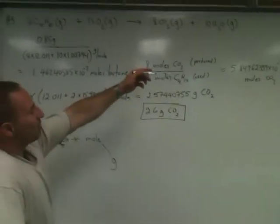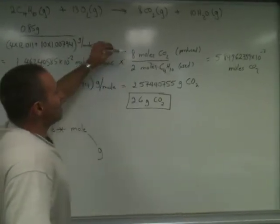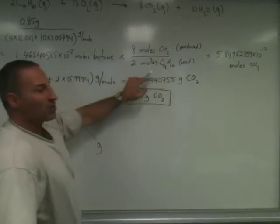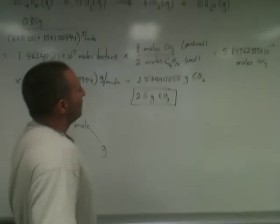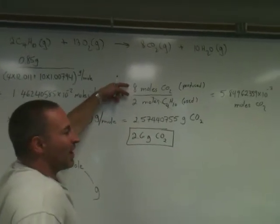We want to go to moles of the other substance, CO2. So that's why we incorporated this ratio. What is the ratio? It's 8 moles of CO2 produced for every 2 moles of butane used. How do I know to put it 8 over 2? Why didn't I put it 2 over 8? How do we figure that out?